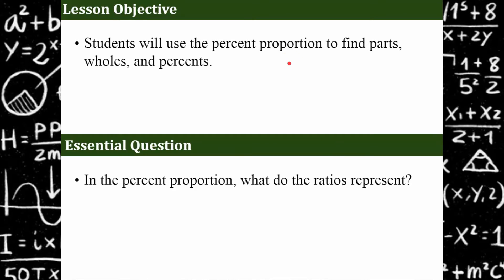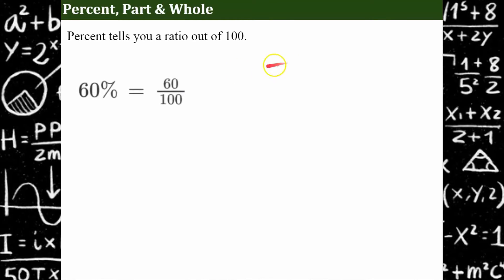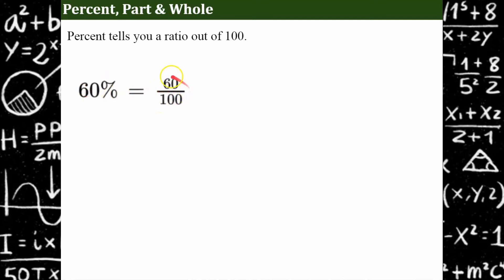We're going to put together all prior knowledge that you already have. So let's first talk about percent, part, and whole. A percent tells you a ratio out of 100. So 60 percent is equivalent to 60 parts out of 100, with 100 being the whole. So when we look at a percent, our whole is 100. A percent is a ratio — 60 being the part out of the whole of 100.